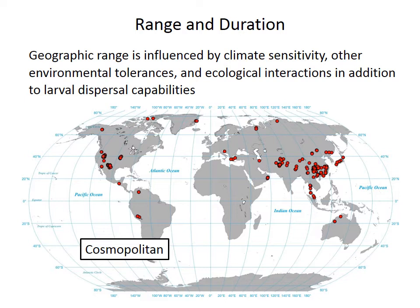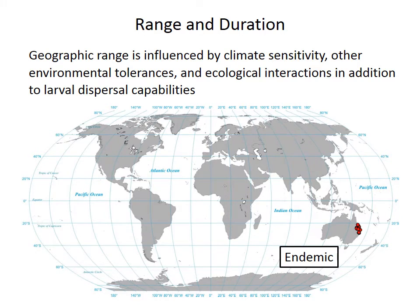There are two important terms to remember that can be used to describe a species distribution. Species with a wide distribution, such as this example — the red dots reflecting the locations in which a species has been found — can be called cosmopolitan, whereas endemic species are restricted to a small and localized region.